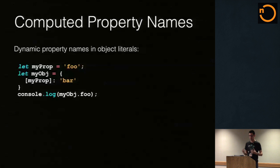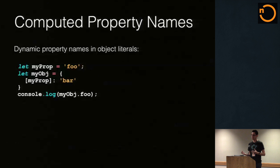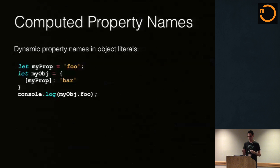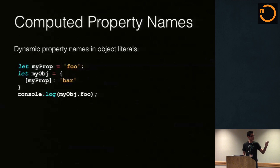Moving on to object literals, we have some new ways of specifying properties inside of them. There's what's called computed property names. What this allows you to do is you have a variable that has a string or something that can be coerced to a string in it, and you put it in your object literal inside of square brackets. This means: take the value of your variable and dump it in as the key name. This is useful for mixins and things like that. When we run this code, we're referencing object.foo, which is the value of myProp, and we get bar back.